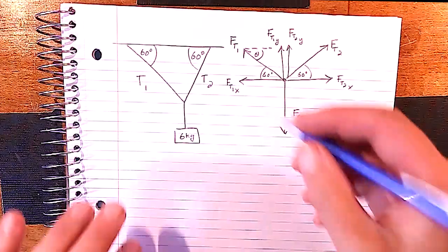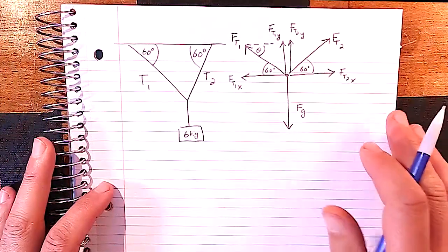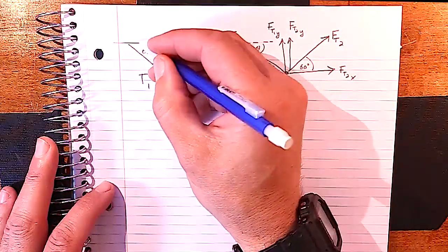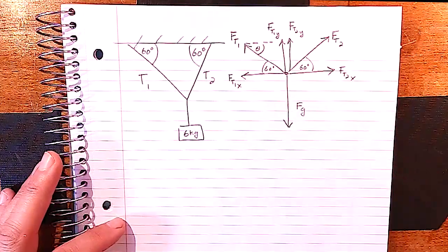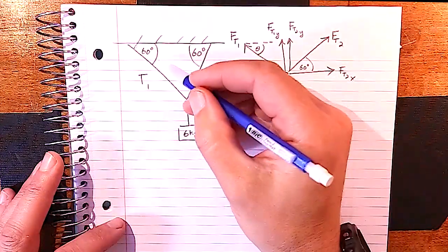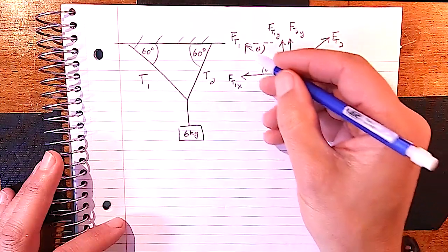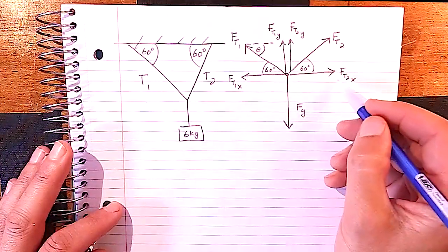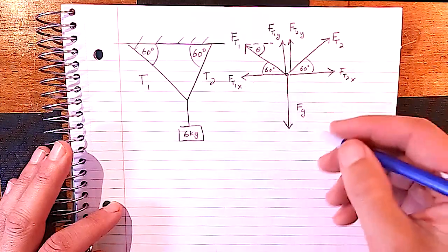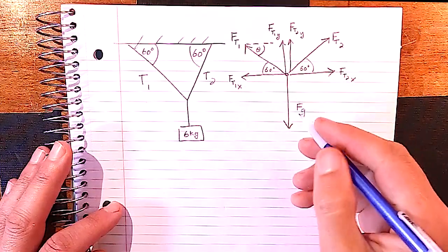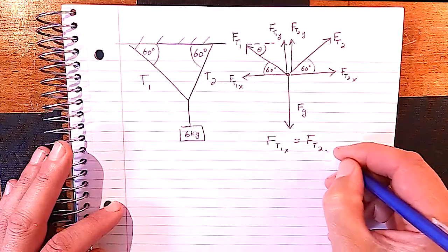Next is a symmetric cord problem: two cords of equal length at equal angles support a 6 kilogram hanging weight from a ceiling. If the angle at the wall is 60 degrees, alternate interior angles tell us the cord also makes 60 degrees with the horizontal at the junction. The x-components of the two tensions are equal and opposite and cancel. The y-components are also equal, so we can use symmetry to simplify.